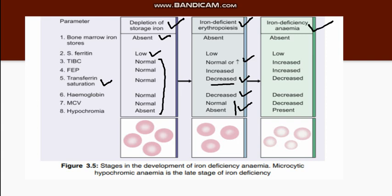Lastly, there is iron deficiency anemia. In this case every feature is present: stores are low, TIBC is increased, and now RBC morphology has changed — there is microcytosis and hypochromia.